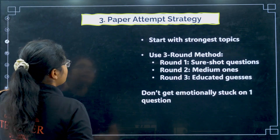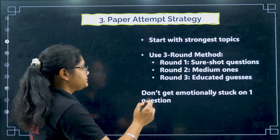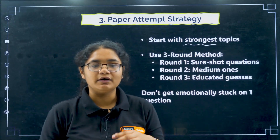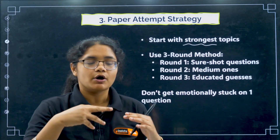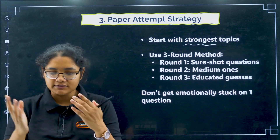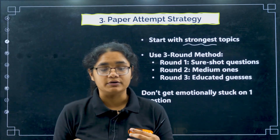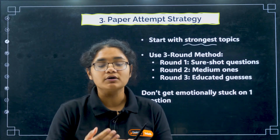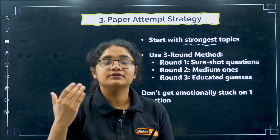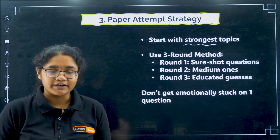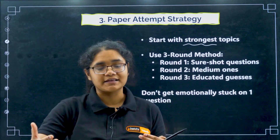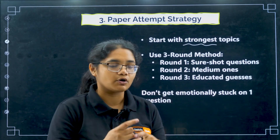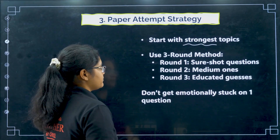Coming to paper attempting strategy - start with your strongest topics. For example, if you are very good in physical chemistry or organic chemistry, once you see the paper, find those questions first and start solving them. This will boost your confidence, keep you positive throughout the exam, prevent panic, and help you do better overall. Always start with the strongest topics.